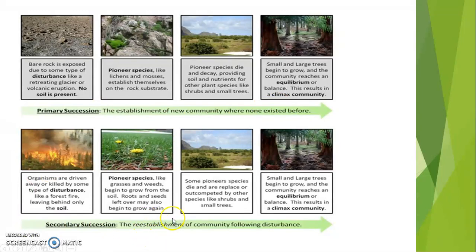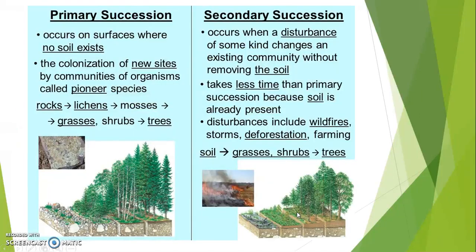Secondary succession means recolonization or re-establishment of the community following disturbance. Organisms are driven away or killed by some type of disturbance. Some pioneer species die and are replaced or outcompeted by other species like shrubs and small trees. Small and large trees then begin to grow and the community reaches equilibrium, resulting in a climax community. Primary succession versus secondary succession: primary occurs on surfaces where there is no soil, and pioneer species colonize new sites. Secondary succession occurs when a disturbance changes an existing community without removing the soil, and it takes less time than primary succession because soil is already present.